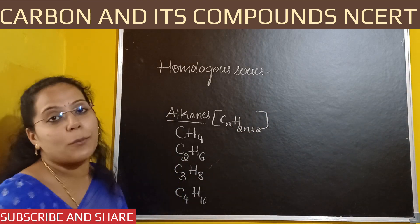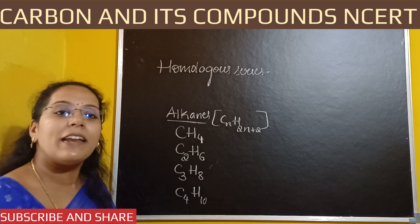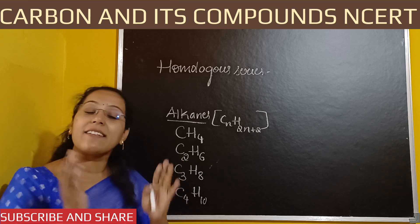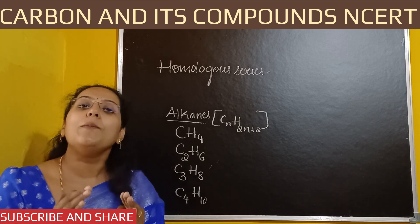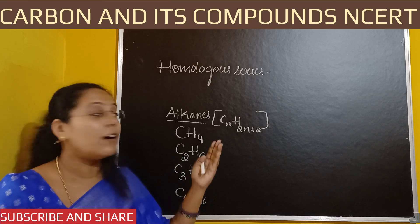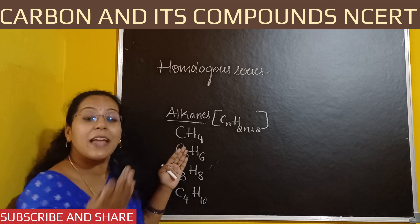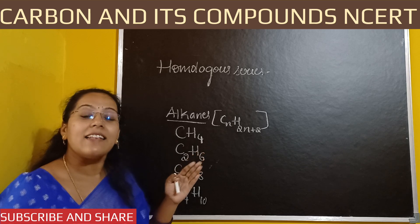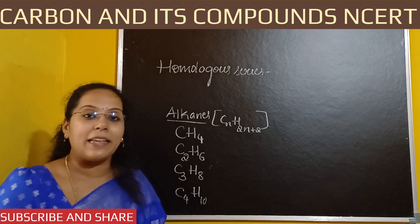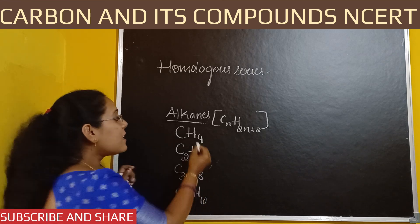They have the same general formula but similar chemical properties. The chemical properties of methane and ethane are not exactly the same but almost similar, because they have the same type of molecular formula related to the same general formula. However, they do not have exactly the same chemical properties.